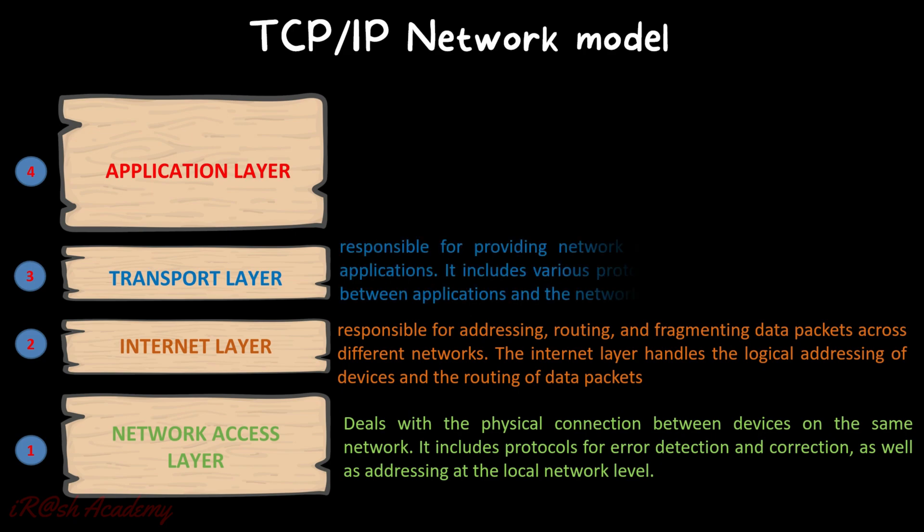The Transport Layer is responsible for providing network services directly to end users or applications. It includes various protocols that facilitate communication between applications and the network. The two major protocols used in the Transport Layer are TCP and UDP, which stand for Transmission Control Protocol and User Datagram Protocol. TCP is a reliable protocol but slow in action, while UDP is a non-reliable protocol but very fast in action.